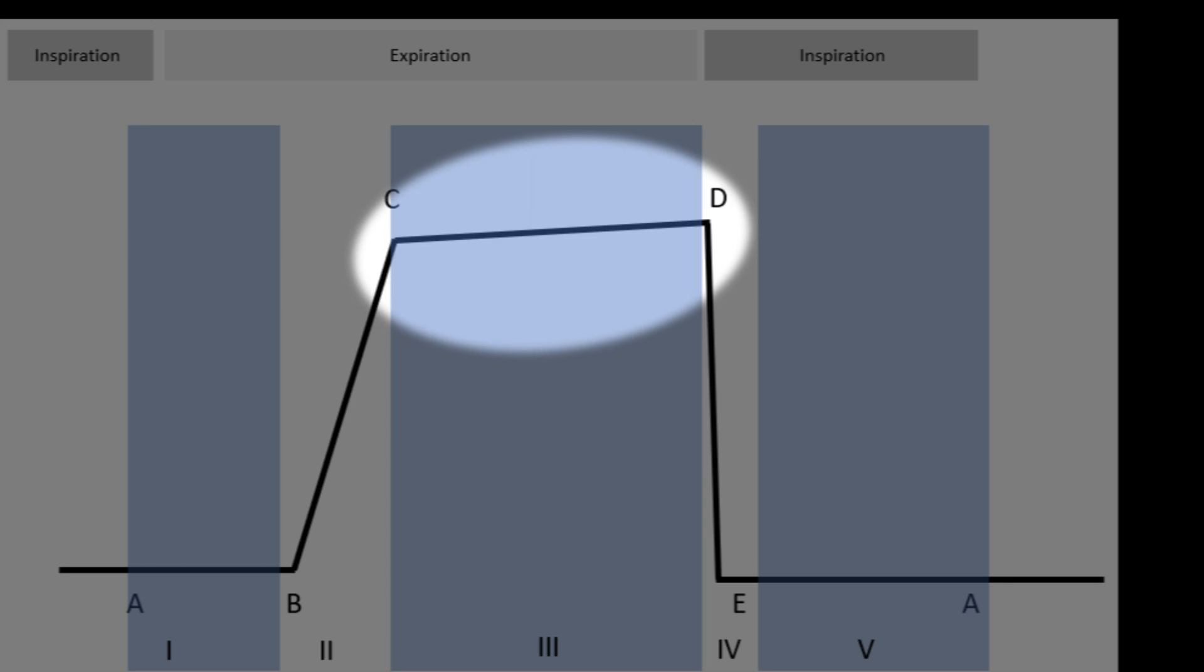Phase three, C to D. This is late expiration. All the gas that passes the sensor is alveolar gas, and this results in the alveolar plateau. This has a slight upward stroke, because not all alveoli have the same partial pressure of CO2. Those alveoli with the lower VQ ratio empty more slowly, contributing to the later part of phase three, which leads to the slight upward slope.